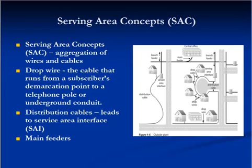Sometimes SAIs are called terminal boxes, terminals, terms, cabinets, or boxes. Main feeder is a group of wire feeders connected to the backbone of the telephone system. Main feeders are responsible for connecting a group of branch feeders to the central office. Branch and main feeders, like distribution cable, are installed at least 6 feet underground in conduits made of a thick plastic sheathing.